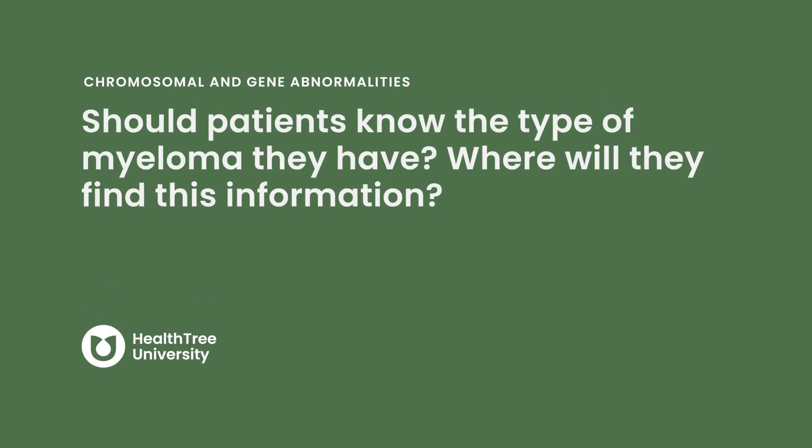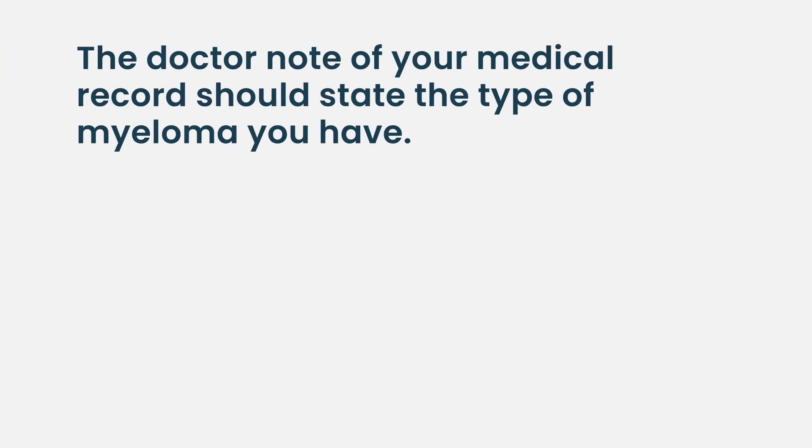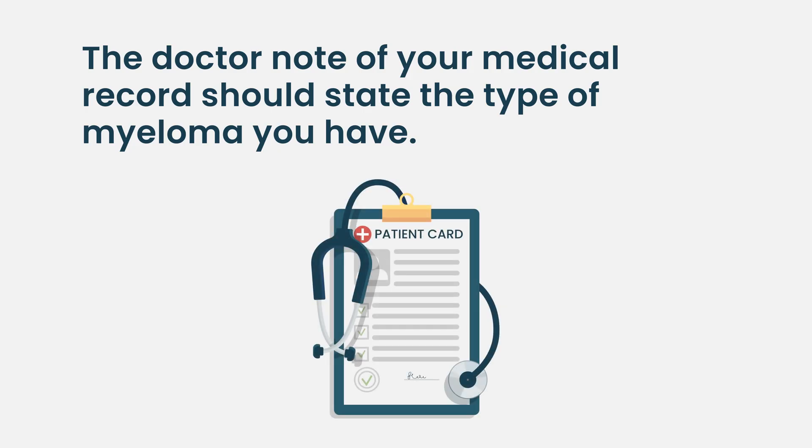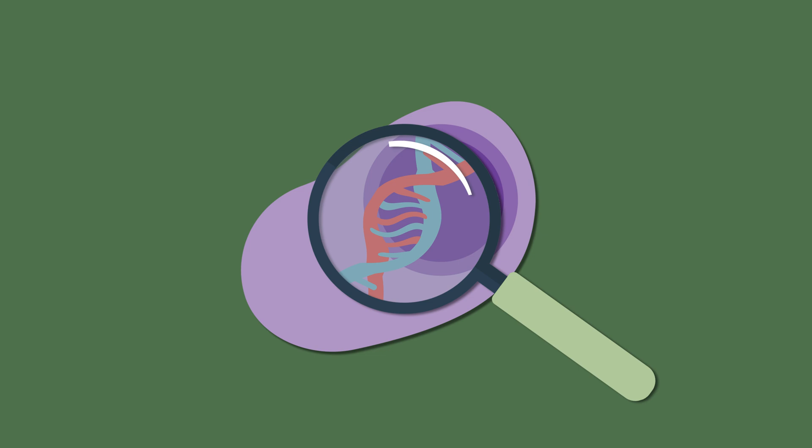Should patients know the type of myeloma they have, and where can they find this information? It's an important part of the clinical note — typically one of the first things noted — so a patient might see terms like 'hyperdiploid,' 't(11;14),' or 't(4;14)' in a summary of their characteristics. In terms of treatment, alkylating agents and carfilzomib are considered particularly important for 4;14 patients, while IMiDs tend to work particularly well in hyperdiploid patients, though these drugs are used across all patients. High-risk genetics require a more intense approach.